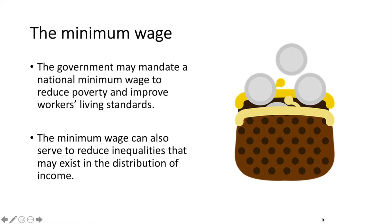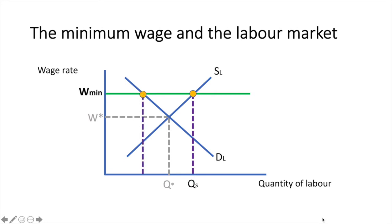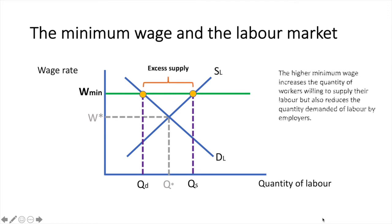However, a higher minimum wage could actually result in greater unemployment. This diagram is exactly the same as before, except the reason for the higher wage is a government mandated minimum wage. If it is set higher than the equilibrium wage rate Wstar, it will result in excess supply and thus create unemployment, but will still benefit the Qd quantity of workers who receive the higher wage.